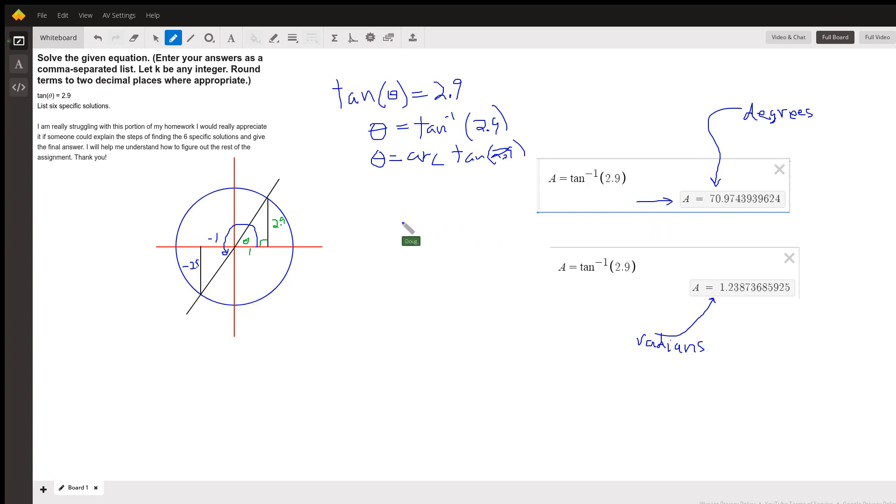But it turns out there's infinitely many angles that have a tangent of 2.9. If you think of yourself on a circle, in this case with a radius of 2.9, this theta right here is the 70.97 degrees because it has a tangent of 2.9.